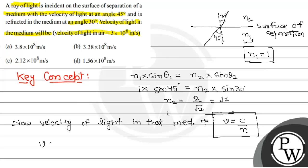v is equal to 3 into 10 to the power 8 meter per second, and n ki value is root 2. So if we simplify it, the value is 2.12 into 10 to the power 8 meter per second.